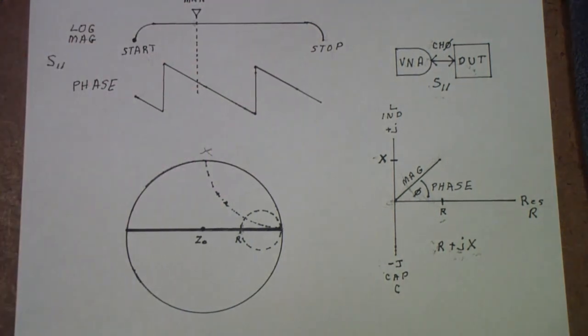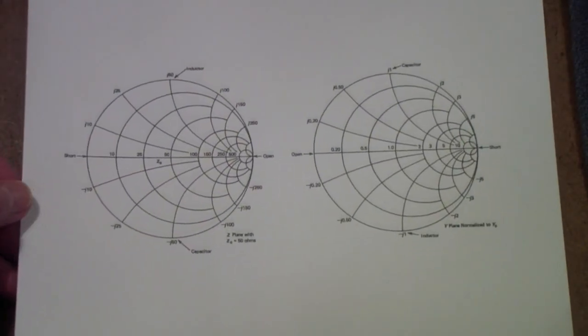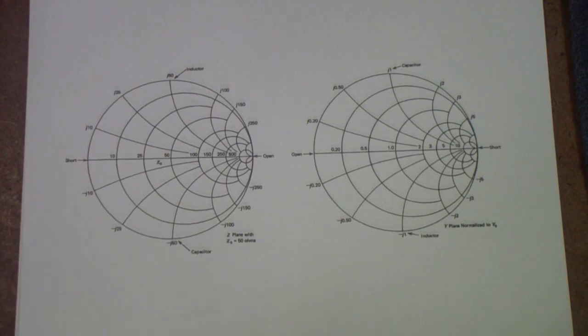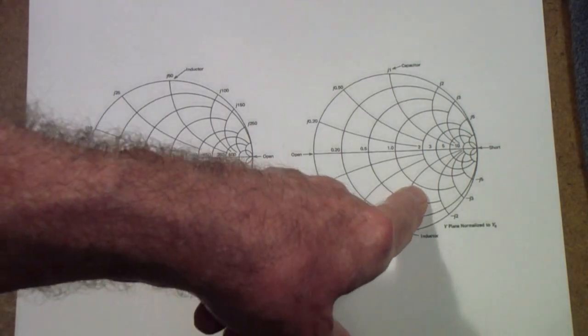So, I hope that helps put some things in context. Before I close, I hope I won't confuse the issue much more, but I will point out something that the Smith chart we've been using is the Smith chart for impedance. You can draw a Smith chart for admittance.